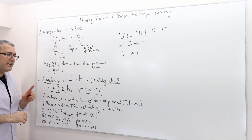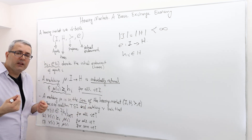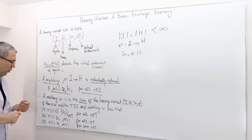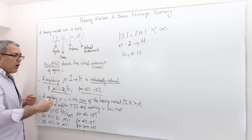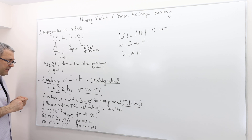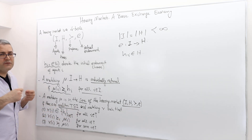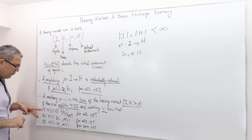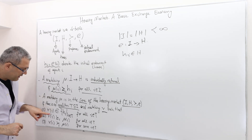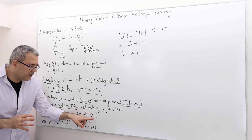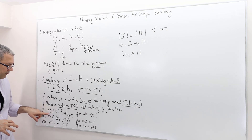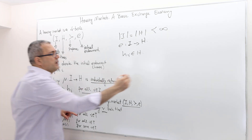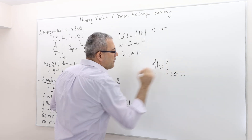The second important concept is core. We already defined that notion, but specifically in this framework, this is how we define core. A matching mu is in the core of the housing market if there exists no coalition T — a non-empty subset of I — and another matching V, such that three properties hold. The first one says that all agents in the coalition T have their new matching in the set {H_i : i in T}.